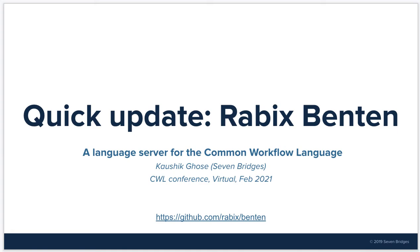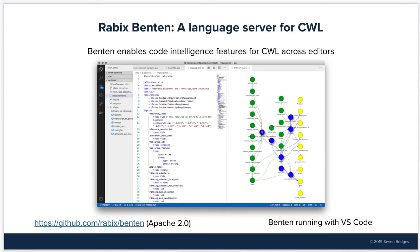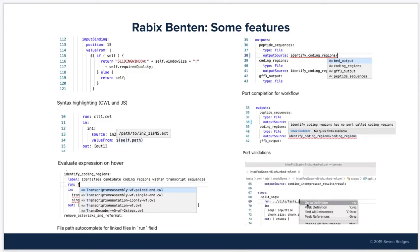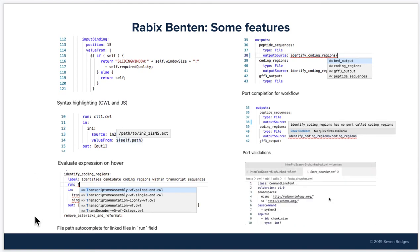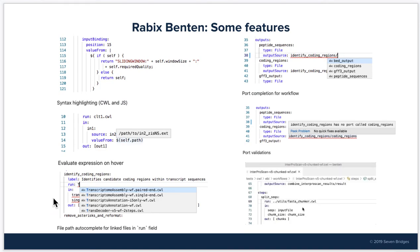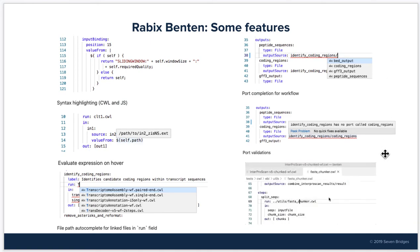Next, I want to give a quick update on Rabix Benten. Rabix Benten is a language server for the Common Workflow Language — a plugin that can be attached to any editor and enables code intelligence features for CWL. In this screenshot, you can see Benten running with VS Code, providing syntax highlighting for both CWL and JavaScript, the ability to evaluate expressions on hover using synthetically generated inputs, file path completions for linked files in the run field, port completions in workflows, port validations flagging incorrect ports, and go-to-definition for linked files.